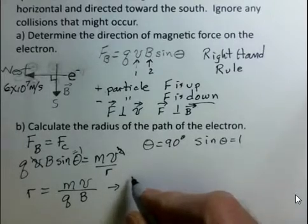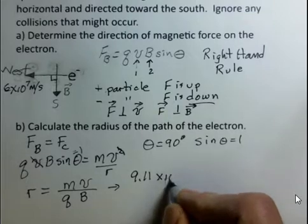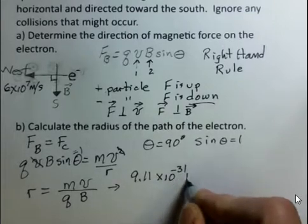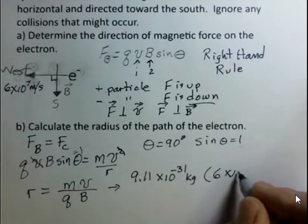So we have these numbers where we can look them up. For the electron, 9.11 times 10 to the minus 31 kilograms. For the speed, 6 times 10 to the seventh.